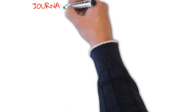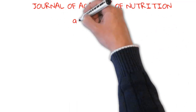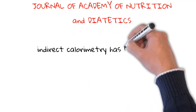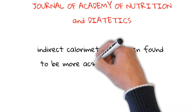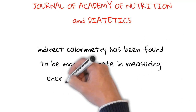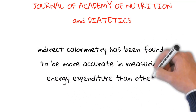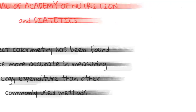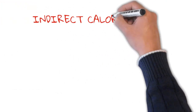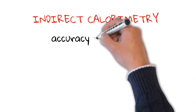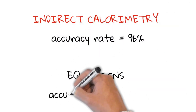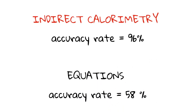According to a study published in the Journal of the Academy of Nutrition and Dietetics, indirect calorimetry has been found to be more accurate in measuring energy expenditure than other commonly used methods, such as equations based on body weight and activity level. The study found that indirect calorimetry had an accuracy rate of 96%, compared to 58% for the equations.